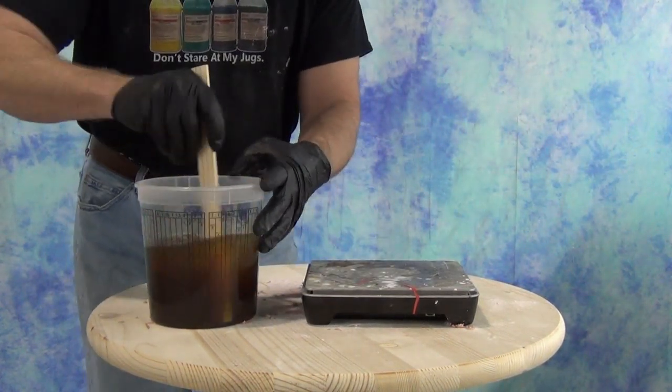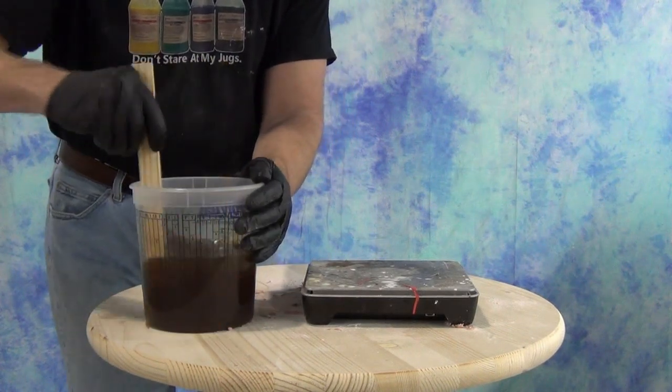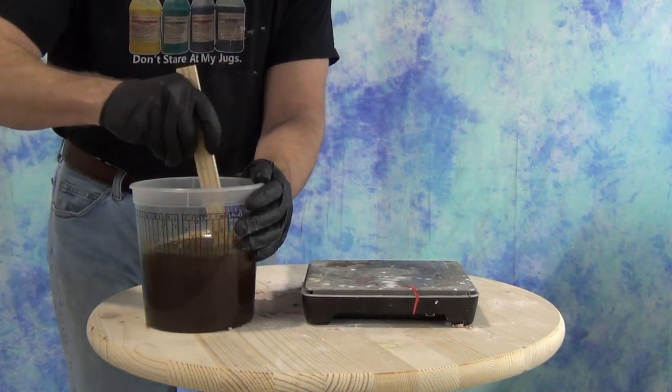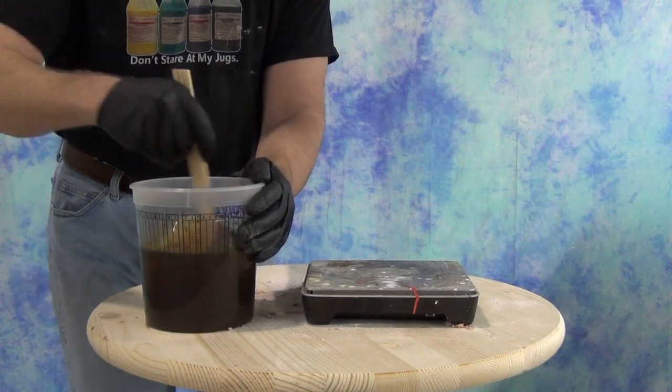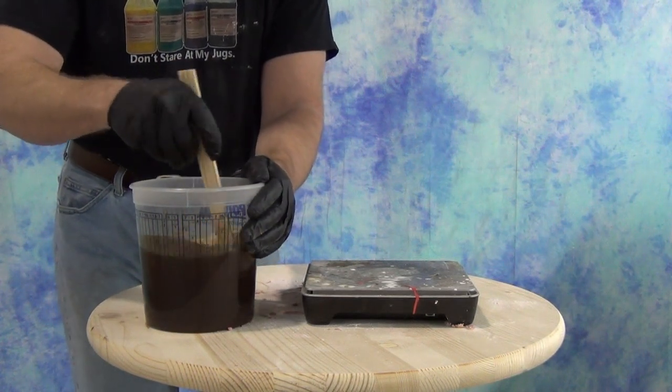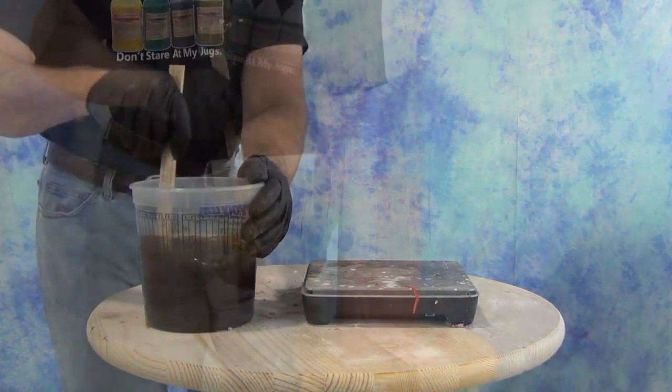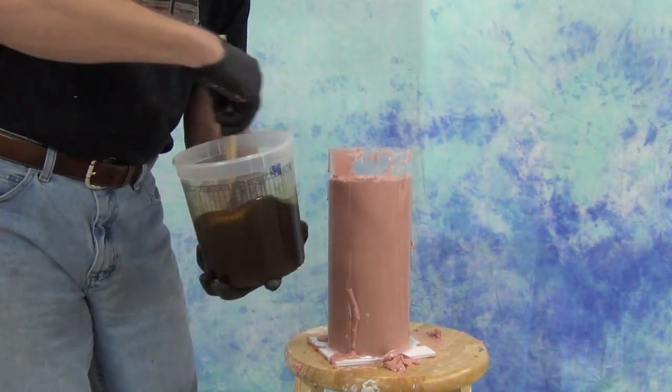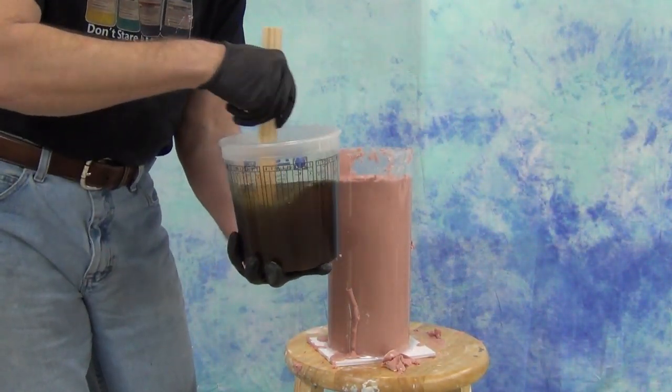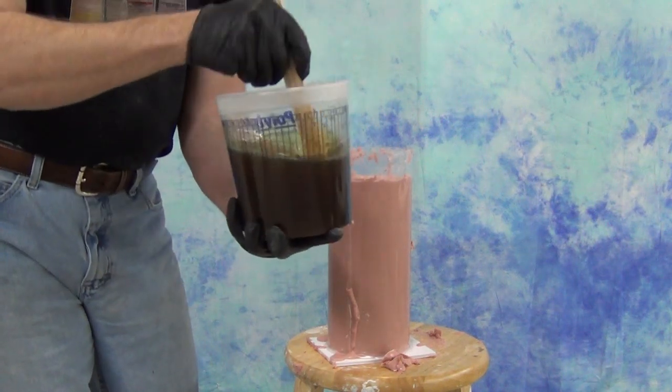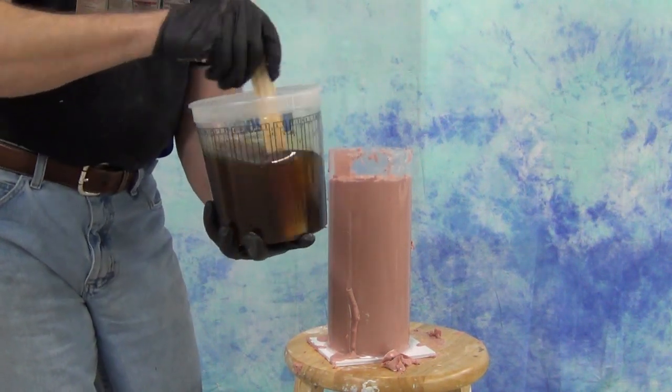With this particular formula we have about three minutes working time. So we want to get that mixed up. You notice I'm doing the usual mixing, scraping the sides and the bottom of the mixing bucket. Our working time starts as soon as those components go together. So you want to make sure you get that thoroughly mixed. Shouldn't take more than about 30-45 seconds. And then prepare to pour.